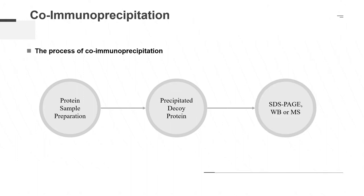Step 3: SDS-PAGE, Western blot, or mass spectrometry. Once the precipitate is obtained, it is necessary to verify the presence of interacting proteins in the precipitate. The protein complex is isolated by SDS-PAGE, and then western blot is used to detect the presence of target protein. If the molecular weight of the target protein is known, SDS-PAGE can be directly used to detect the presence of the target protein. In addition, mass spectrometry can also be used to directly analyze and detect precipitated proteins.